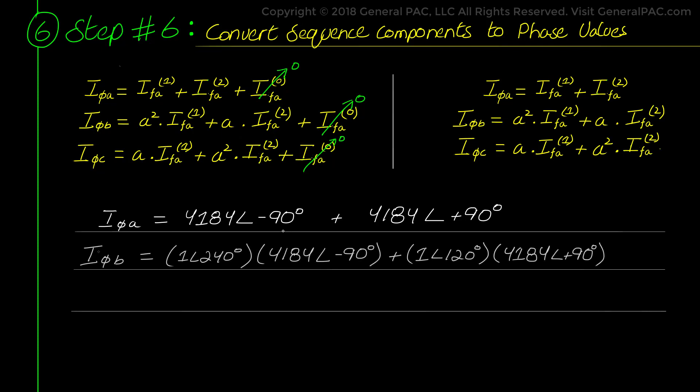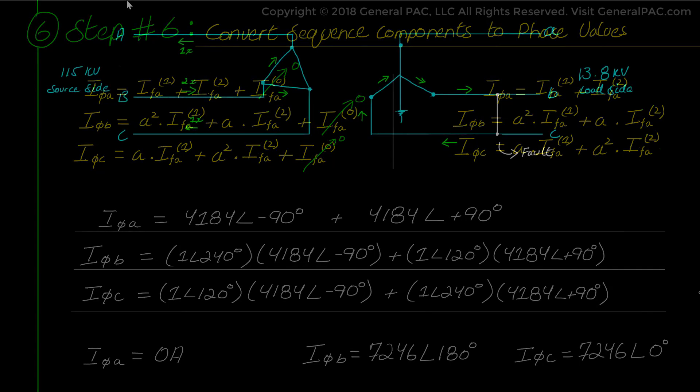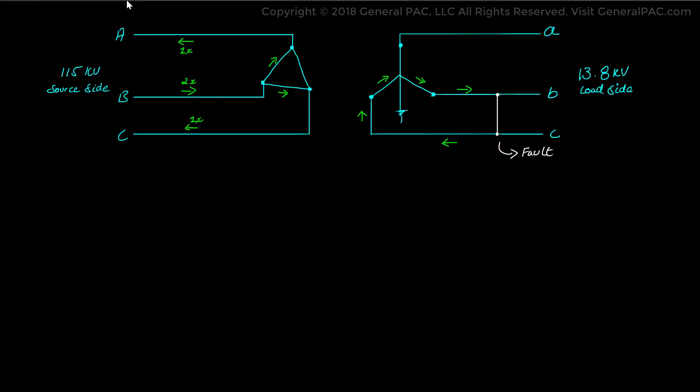We find that the fault current in phase A is zero. And the fault current in phase B and C are equal and opposite of each other. This can be further explained intuitively by the fact that we have assumed that phase B and C phases are shorted. And hence there were no fault current in phase A because it was the unfaulted phase and does not carry any fault current.